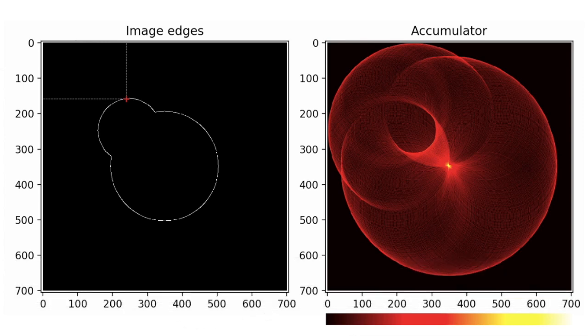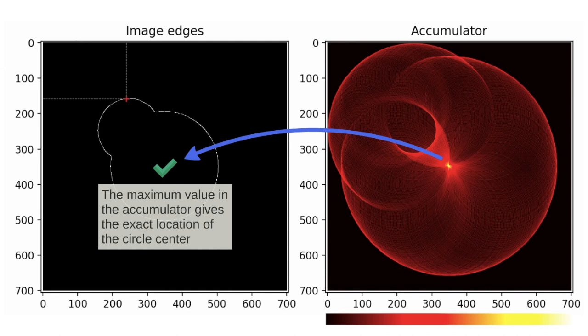When the algorithm computes all the circle Hough Transform we will have this accumulator and then the maximum value in the accumulator gives the exact location of the circle center.